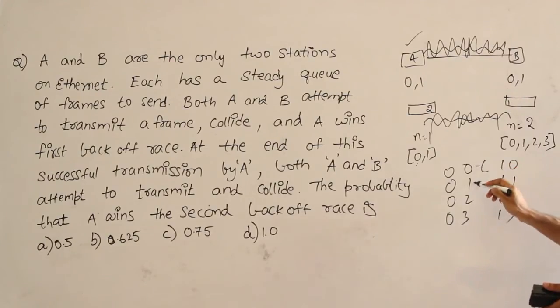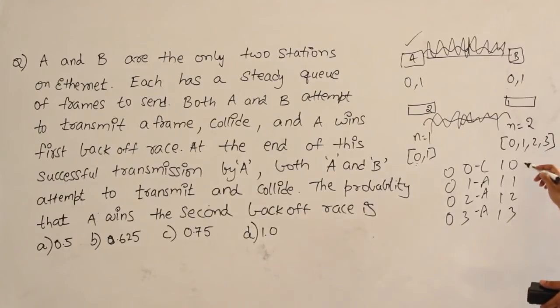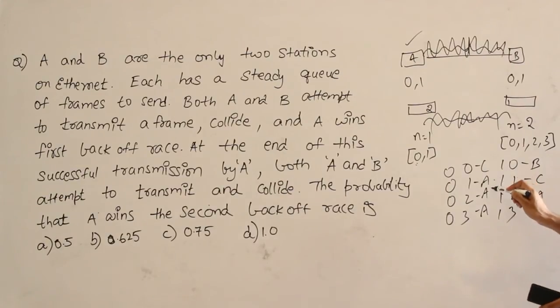This is a collision. This is A winning, A winning, A winning and this is B winning. This is a collision. This is A winning and this is A winning. Therefore, how many A won? 5.